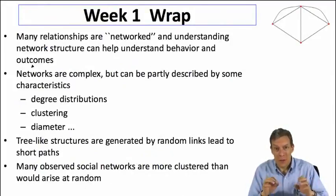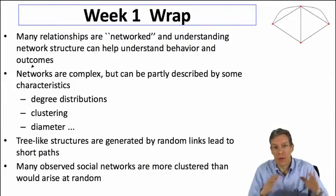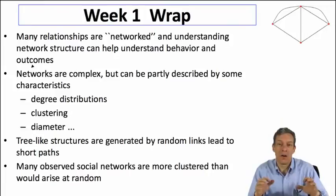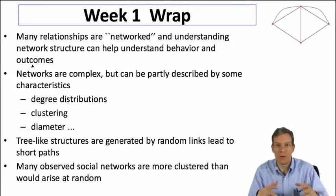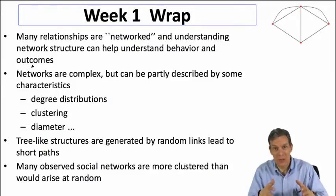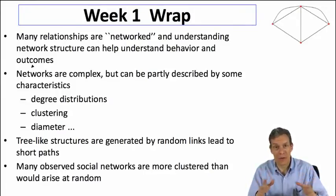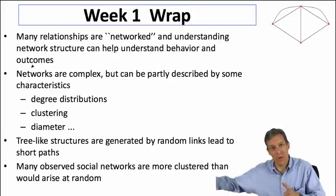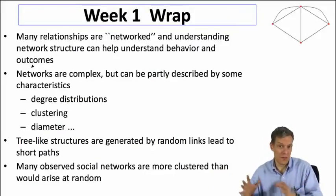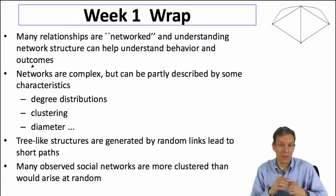One of the most important things we started with was the fact that many relationships of all types — social, political, economic — are networked. So when people, firms, countries, and different kinds of organizations are interacting, they're often embedded in a network structure. And most importantly, understanding those network structures is very important in understanding and predicting outcomes and behavior. That's part of where the course is going, and the latter part of the course will be looking at this in detail.